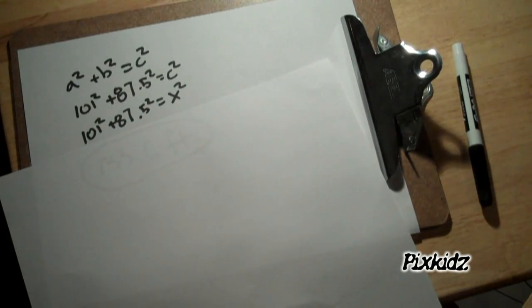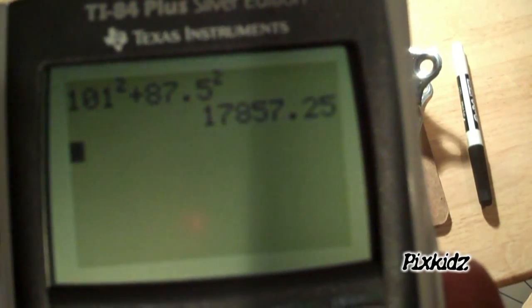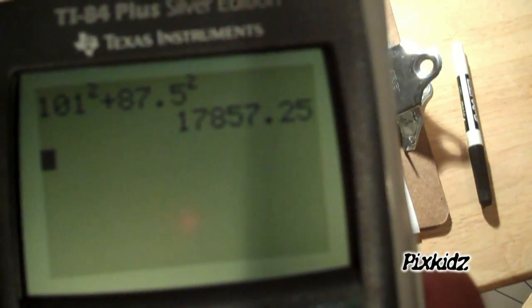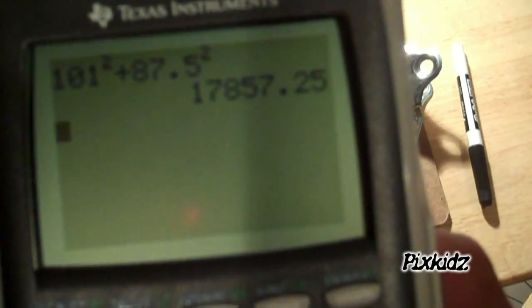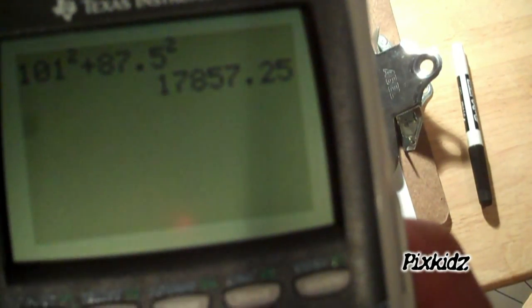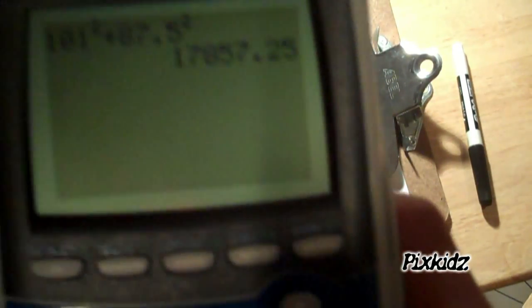Alright so now we're going to go find x. We have to add the 101 squared plus 87.5 squared to get 17,857.25. Now that's not his exact distance obviously. We need to square root it to find his real distance.